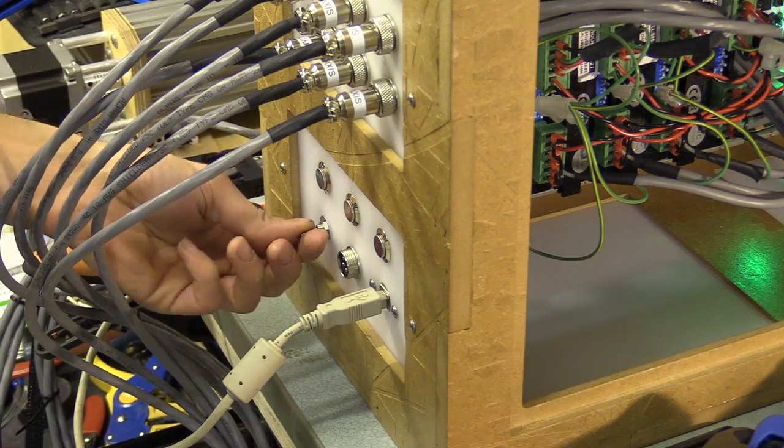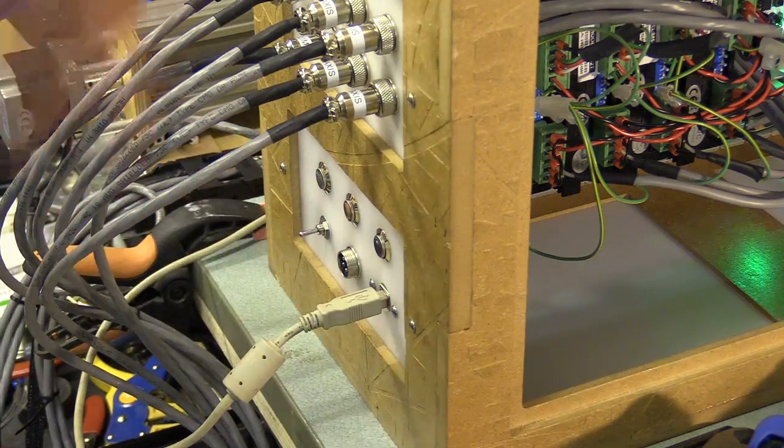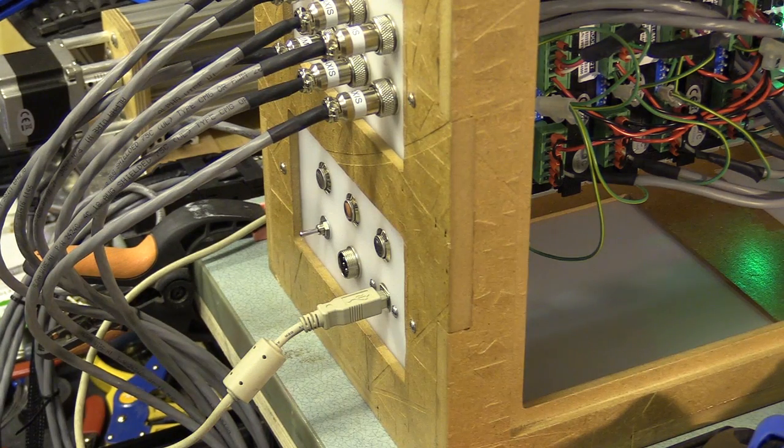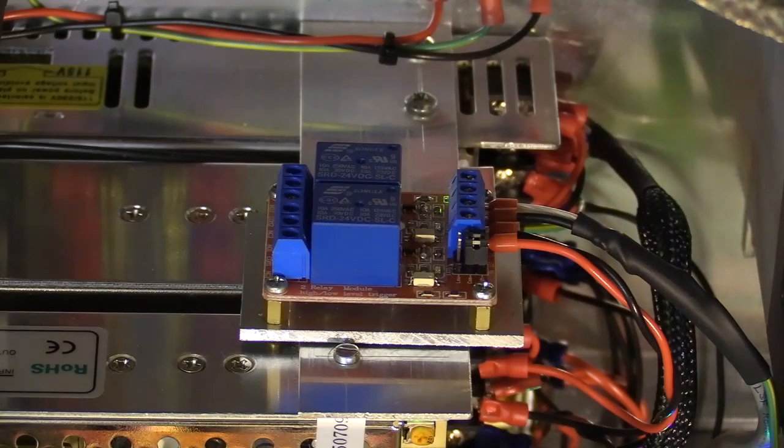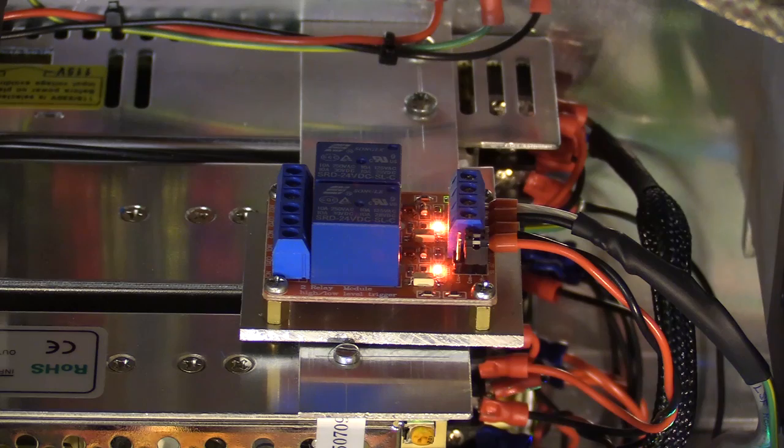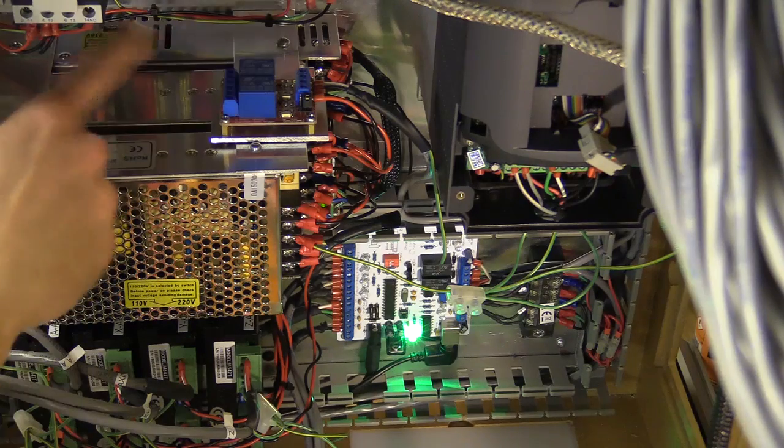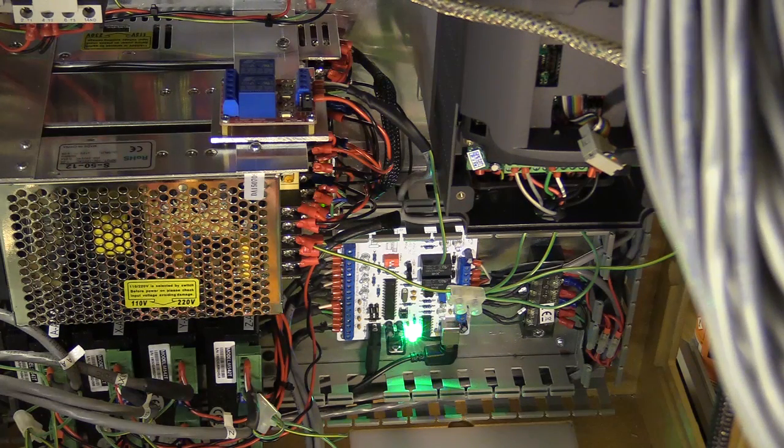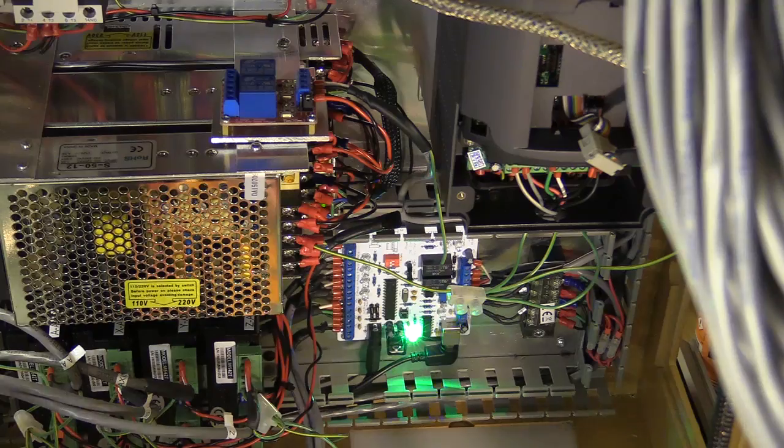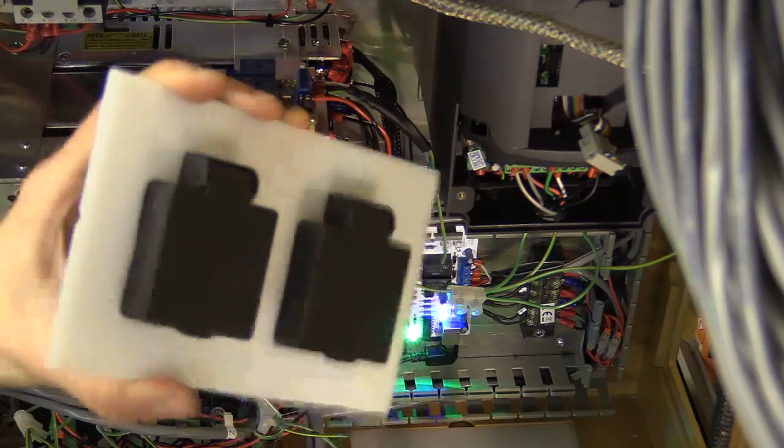So I'm just switching this to the center so the VFD doesn't receive the spindle enable signal. Now I'm going to turn the coolant on, that's off, and I'm going to turn them both on at the same time. Spindle and the coolant. The signal is being received by the relay. Now I just need to wire the power to the panel mounts.